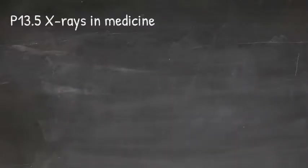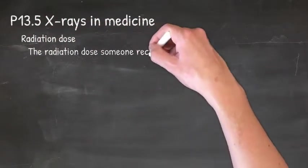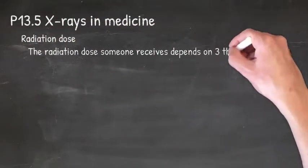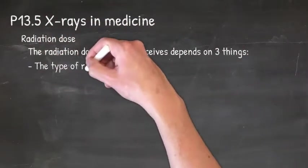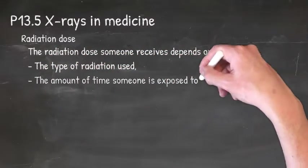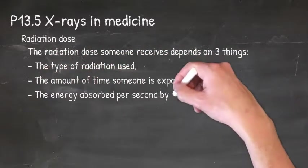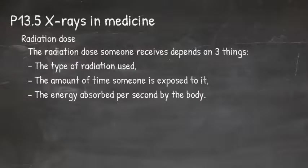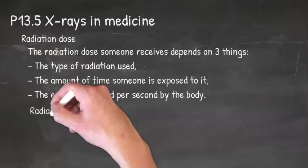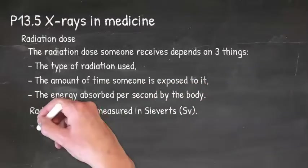Now let's look at radiation dose. The radiation dose somebody receives depends on three things: the type of radiation used, the amount of time someone is exposed to it, and the energy absorbed per second by the body. The radiation dose is measured in sieverts, symbol Sv.